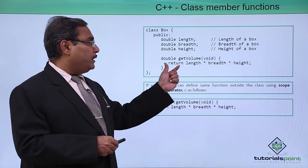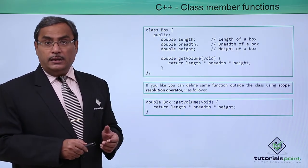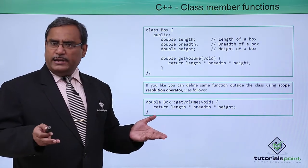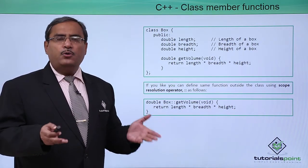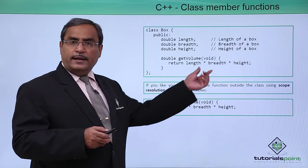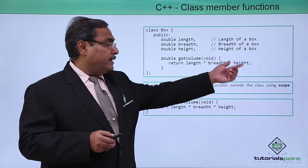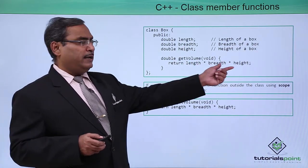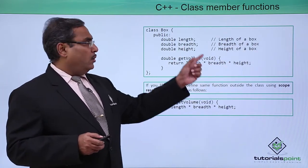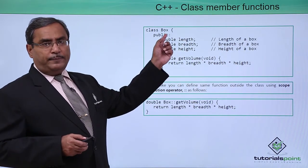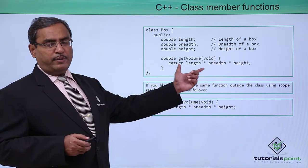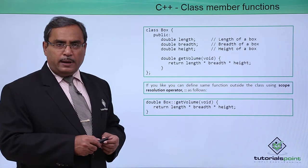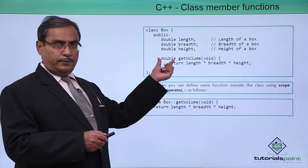We know how to calculate the volume of a box; the formula is very simple. We are supposed to multiply length, breadth and the respective height of the box. All the variables are of type double, so after multiplication the result will also be double. So it returns a double.